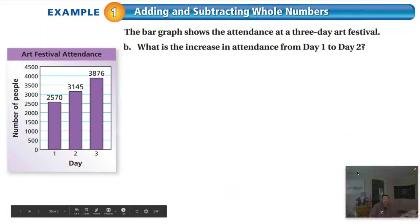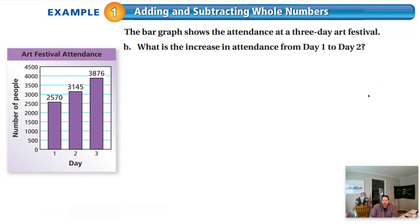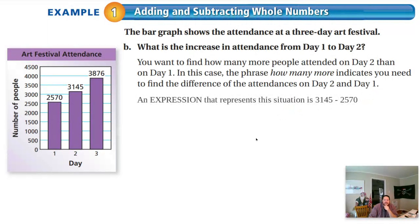What if we're doing this problem? What is the increase in attendance from day 1 to day 2? What operation are you doing to solve this problem? So, when you see increase, you might think addition. But actually, if you're finding the increase from one day to the next, you will be doing subtraction. An expression that represents what we will be doing for this problem to figure out day 1 to day 2 is we're going to subtract 3,145 minus 2,570. That will be the difference between day 1 and day 2.